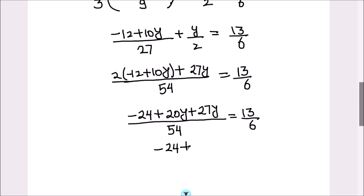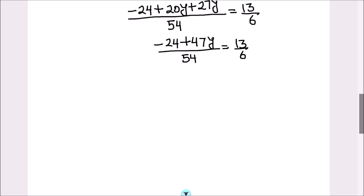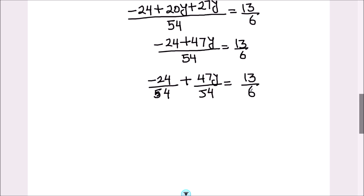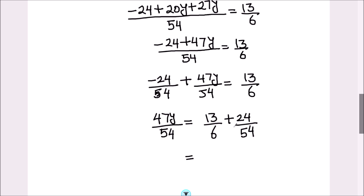So that's negative 24 plus 20y plus 27y divided by 54 equals 13 upon 6. Combining the y terms: negative 24 plus 47y divided by 54 equals 13 upon 6. Let's separate the terms because we want to find the value of y. We will keep the y term on the left hand side and move all other terms to the right hand side.